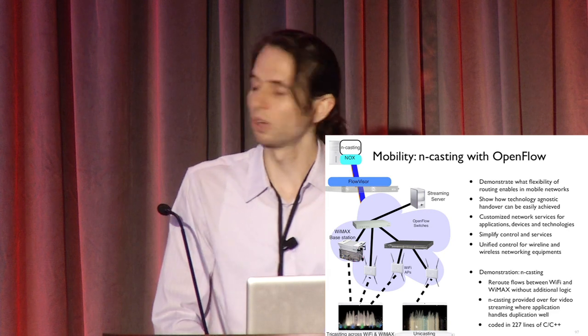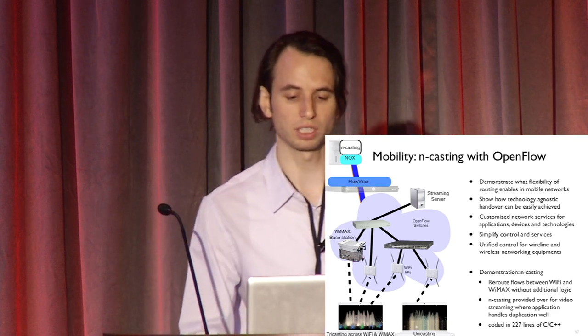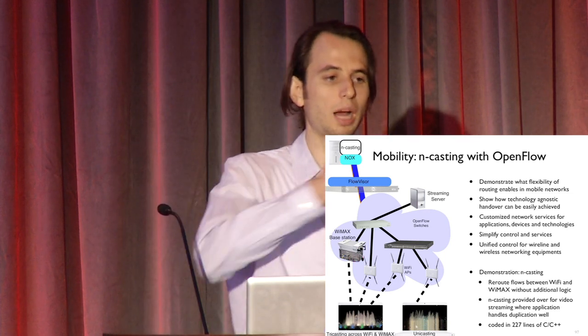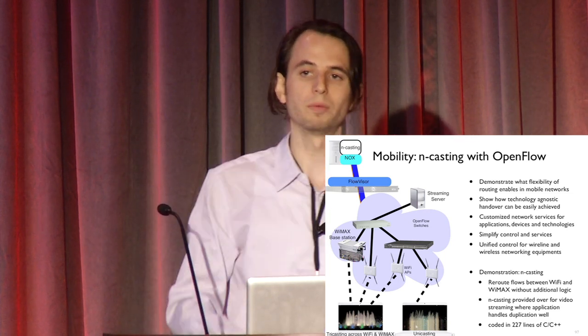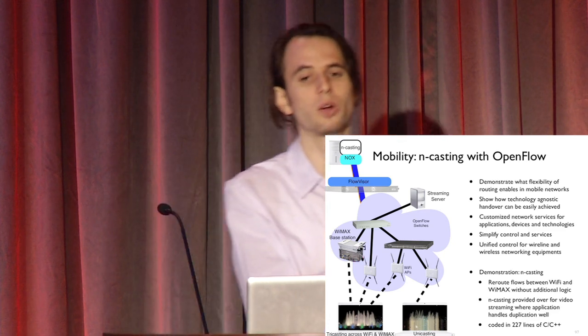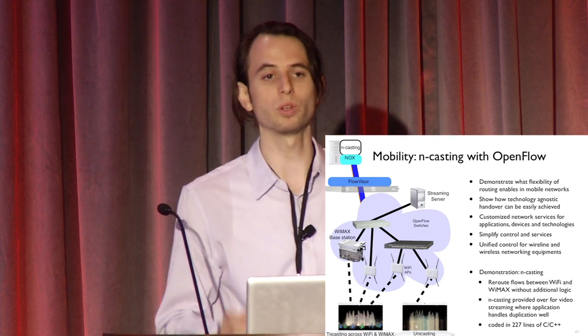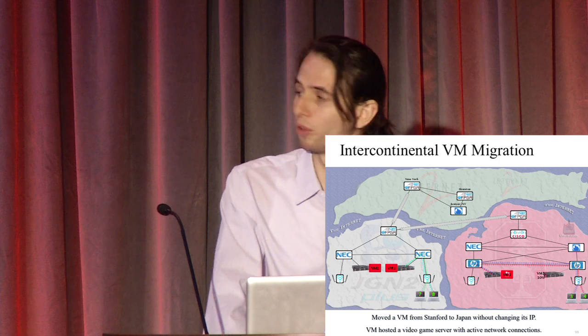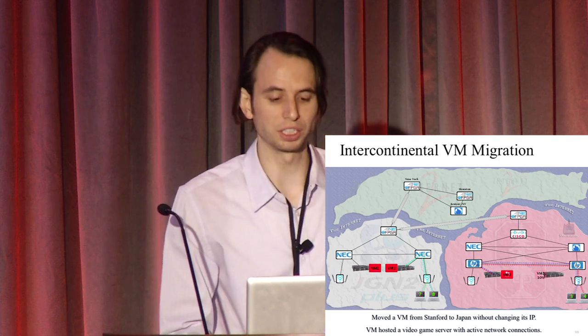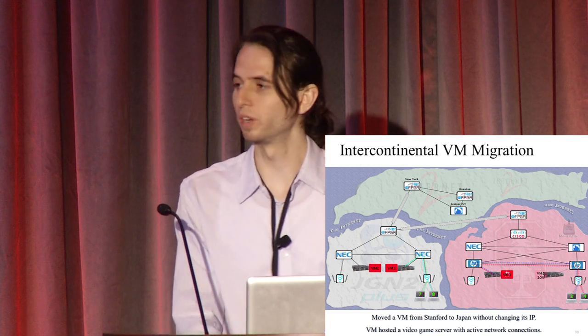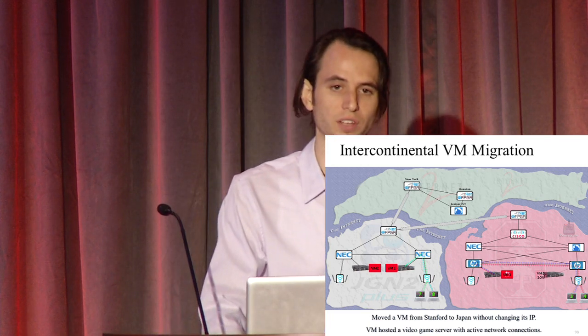Another application is mobility. I'm going to show this video first — it's n-casting with OpenFlow. As you walk around a campus, flow entries in the network are optimized to send you video at high quality without losing frames as you move between different access points, possibly even transitioning between Wi-Fi to Wi-Fi as well as Wi-Fi to WiMAX. Another demo is intercontinental VM migration — one of the first OpenFlow demos using different vendor switches, moving across the Internet while keeping a VM's IP. The site is openflow.org/videos.